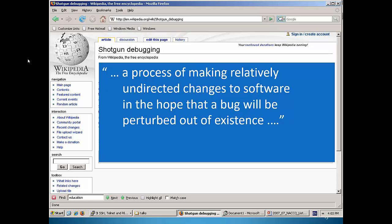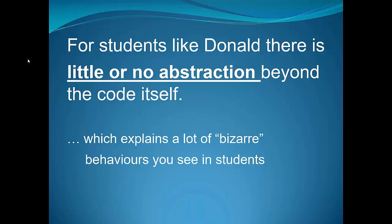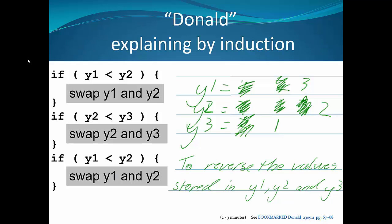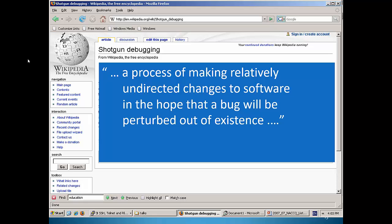For example, the practice known as shotgun debugging in Wikipedia is a process of making relatively undirected changes to software in the hope that a bug will be perturbed out of existence. You've probably seen first semester students attempting to do exactly that. If they are a student like Donald who cannot abstract from code, who reason by tracing specific values, that's really the only approach you've got to debugging code.